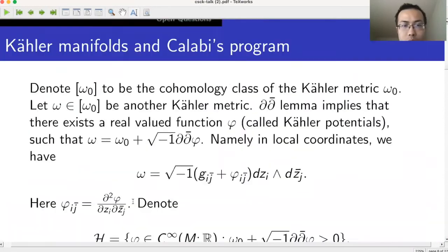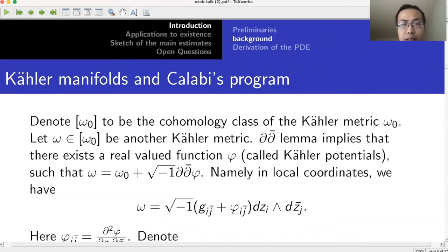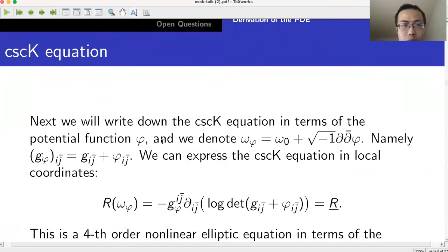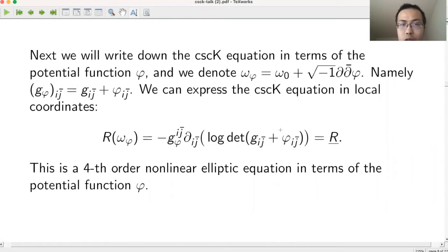Since our goal is to do estimates for the cscK equation, we rewrite the equation in terms of the potential function phi, because any metric in the class can be represented by phi, which becomes the unknown function for which we need to establish estimates. We represent omega_phi as omega zero plus the complex Hessian of phi, and the cscK equation in local coordinates is a fourth-order elliptic equation in terms of phi.